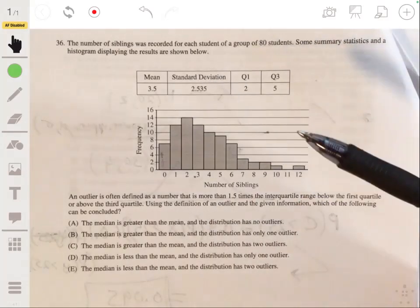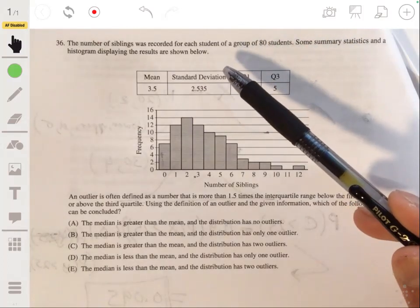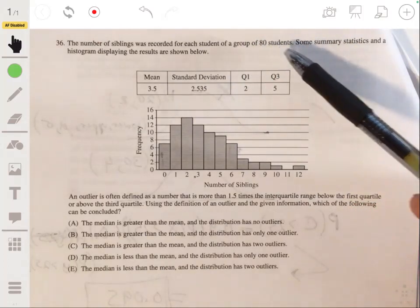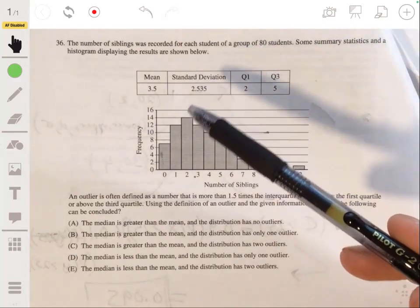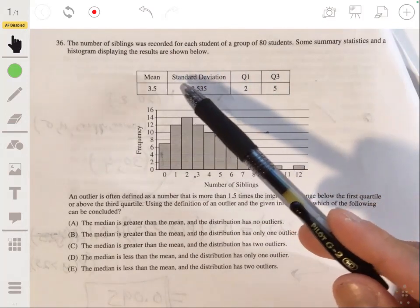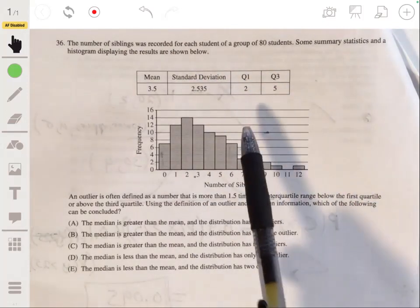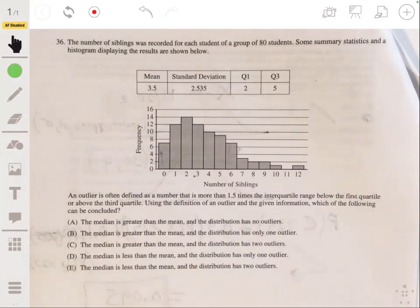All right, 36. We have the histogram that shows the number of siblings recorded for each student from a group of 80 students. Some of the summary statistics in a histogram are given here with a mean of 3.5, standard deviation of 2.535, first quartile of two, and third quartile of five.